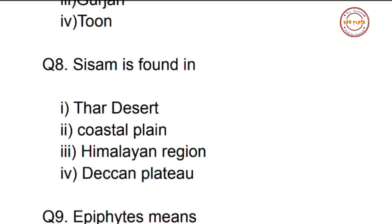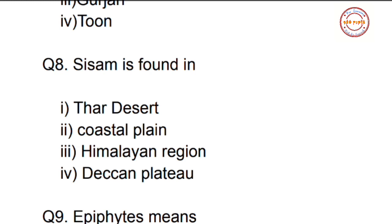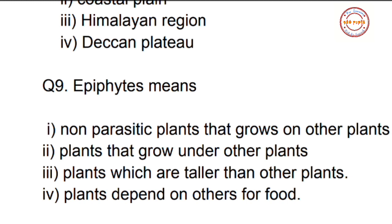Question number eight: Sisham is found in — first option: Thar Desert; second option: coastal plain; third option: Himalayan region; fourth option: Deccan Plateau. Sisham is a tree of tropical evergreen forest and it is found in the Himalayan region. The correct answer is option three — Himalayan region.